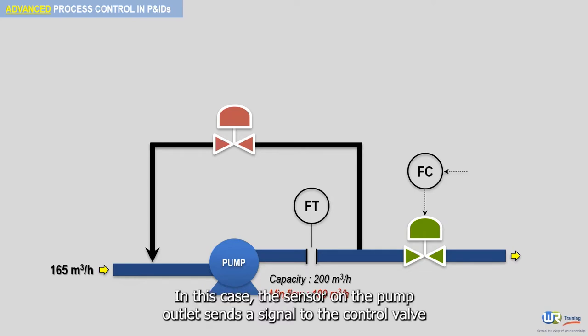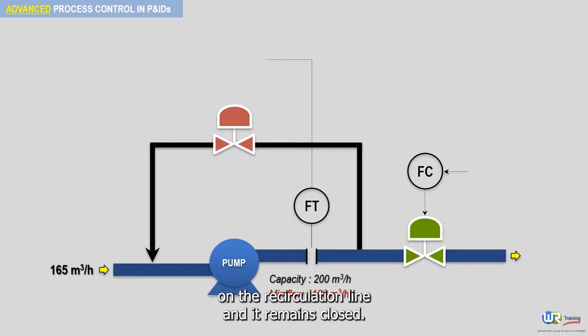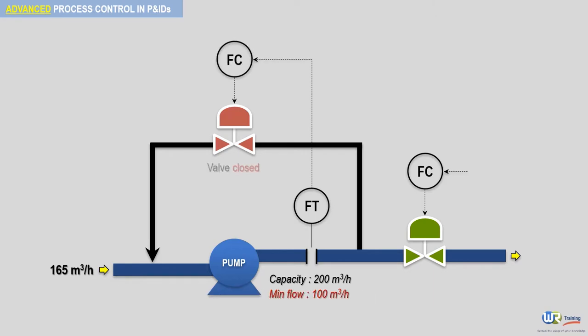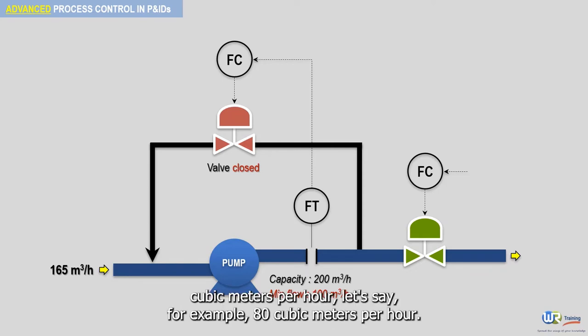In this case, the sensor on the pump outlet sends a signal to the control valve on the recirculation line and it remains closed. However, if the flow drops below 100 cubic meters per hour — let's say for example 80 cubic meters per hour —